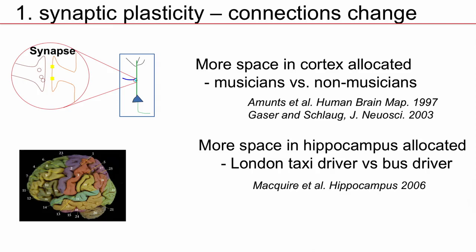A London taxi driver has a different part of the brain which is bigger — a part called the hippocampus. This part is involved in storing the map of the environment. Since a London taxi driver who drives through all parts of the city needs a good map of London, his hippocampus becomes larger than that of a bus driver who always drives along the same few streets.